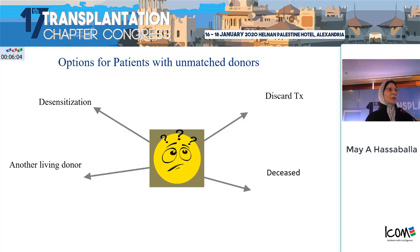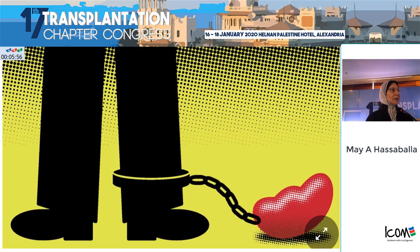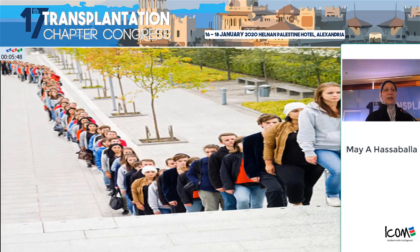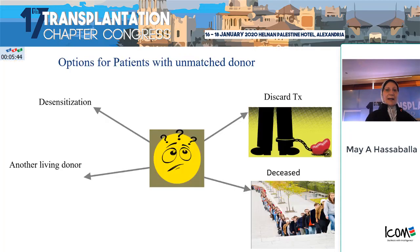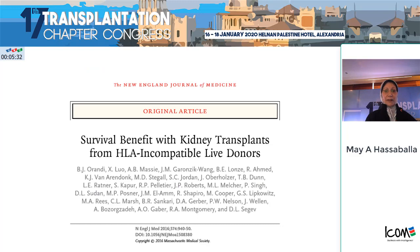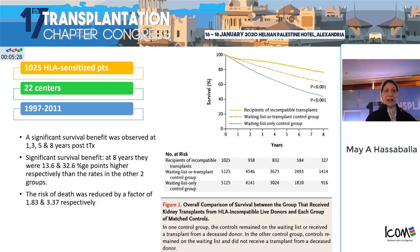The options for patients with unmatched donors are: the patient discards transplantation and lives the rest of his life on dialysis; he looks for a deceased donor, which means a long waitlist of six or seven years — and we don't have deceased donor transplantation in Egypt yet despite the presence of the law; or he undergoes desensitization. There is a survival benefit with kidney transplants for HLA-incompatible living donors — multiple studies show that over eight years there is a significant survival benefit for recipients of incompatible transplants compared to those on the waitlist or recipients of deceased donor transplants.